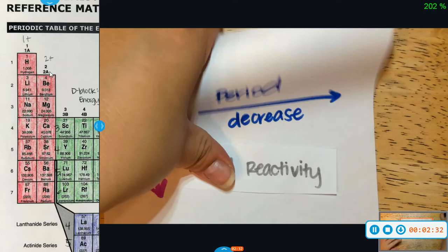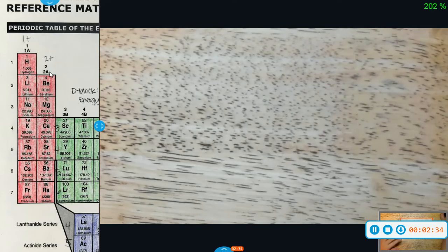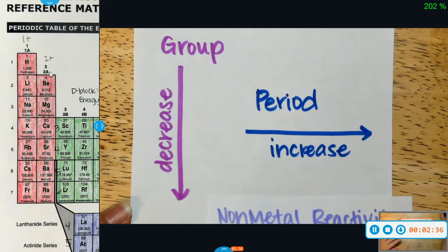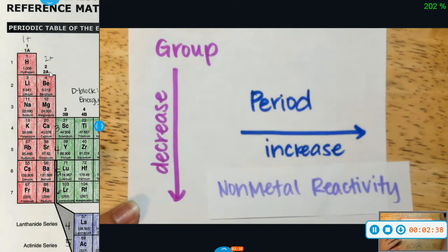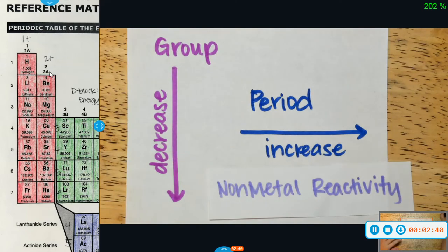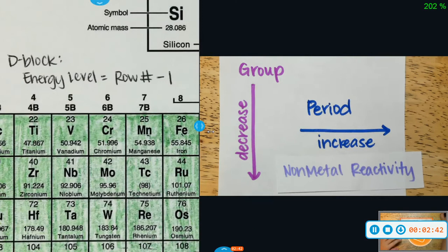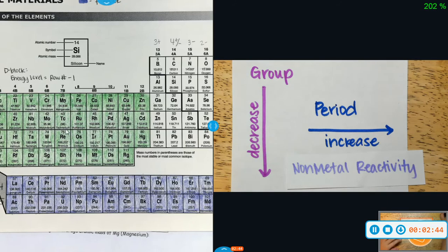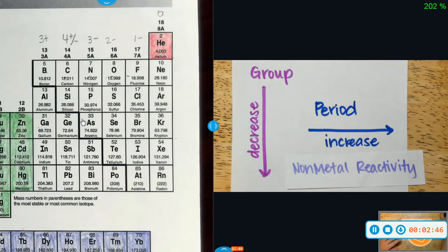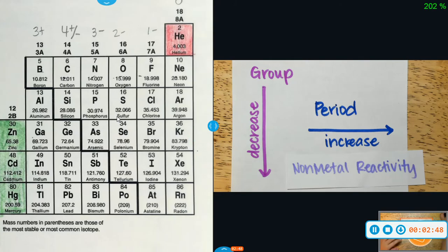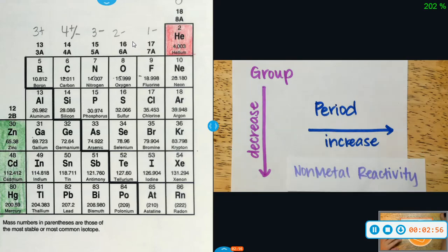For your non-metal reactivity, it's going to be the complete opposite. Your non-metals want to do the opposite — they don't want to get rid of electrons, they are trying to gain electrons. That's the really important difference between metal reactivity and non-metal reactivity.